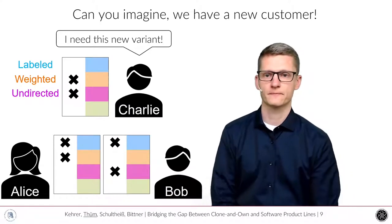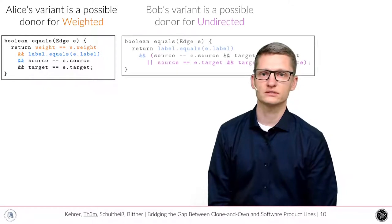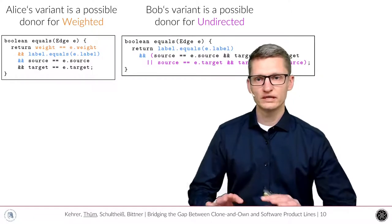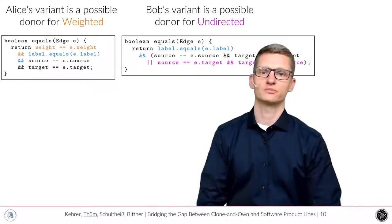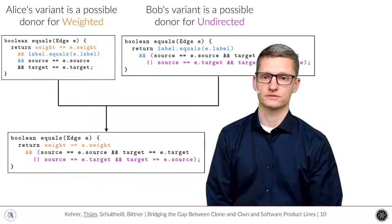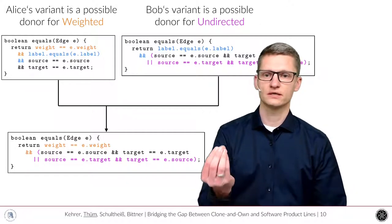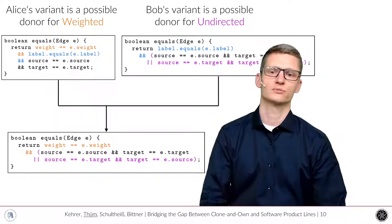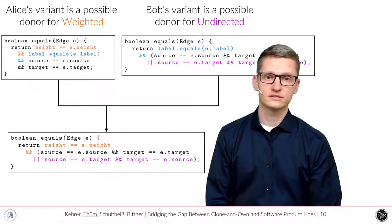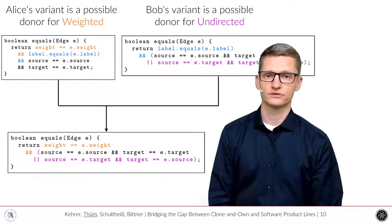So how does it work? We consider Alice's variant as a donor for the feature weighted. We consider Bob's variant as a donor for the feature undirected. And we leave out all the feature traces, all the features that are mapped to features that we do not need. In this case, the feature for labeled edges. So we derive this automatically, but you can see clearly that this is not a typical merge that is supported in version control. We need to really take care and understand where features are located to make this automatic generation feasible.